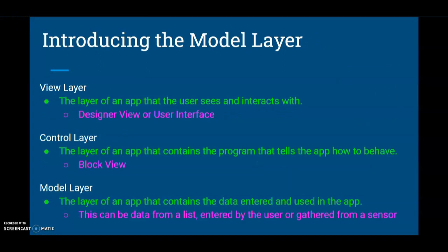Before jumping into our app and actually starting to create our list, there are a few things we need to understand about our model layer. At this point you've learned about two different layers: the view layer, which is where the app and the user can see and interact with — also known as your designer view or your user interface — and the control layer, which contains all the programming that tells the app how to behave. We know this to be the block view.